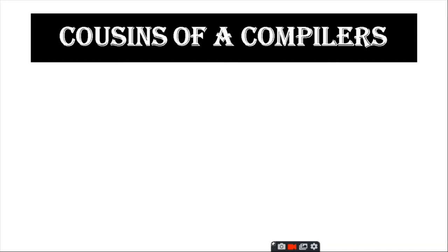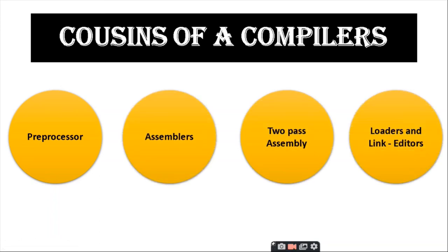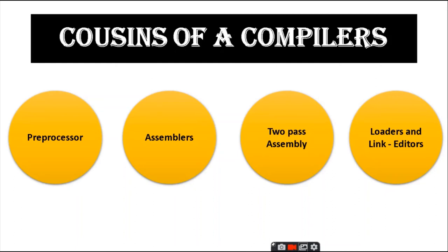Cousins of a compiler include preprocessors, two-pass assemblers, assemblers, loaders, and linkers. Preprocessors produce input to compilers and perform many functions: macro processing allows a user to define macros as shorthand for longer constructs; file inclusion allows a preprocessor to include header files like #include <global.h>; rational preprocessors augment older languages with more modern flow of control and data structuring facilities; and language extensions add capabilities to the language through built-in macros.